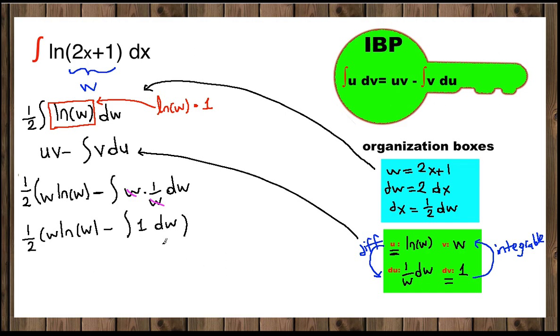Now we know how to integrate 1. So 1/2 w ln(w) minus what is the antiderivative of 1? Antiderivative of 1 with respect to w is w.